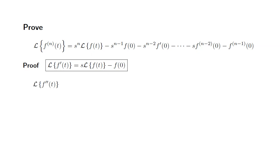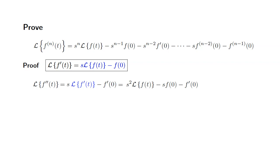Let's start with the Laplace transform of f double prime of t. Since f double prime is the first derivative of f prime, we can apply the same formula above to get s times the Laplace transform of f prime of t minus f prime of 0. We can then replace the Laplace transform of f prime of t with the expression above in blue, giving us s squared times the Laplace transform of f of t minus s times f of 0 minus f prime of 0.